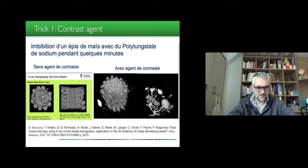Here we have an illustration of the use of a contrast agent on maize with polytungstate which has been imbibed in contact with the maize for a few minutes. You can see here on the left that the contrast is very low, while after putting this in this polytungstate sodium liquid, you really see all the vasculature of the ear pretty well, while it was completely invisible on the left without any contrast agent.